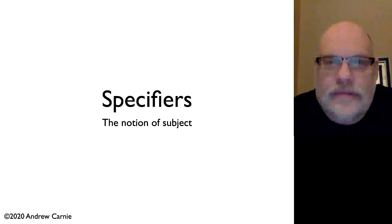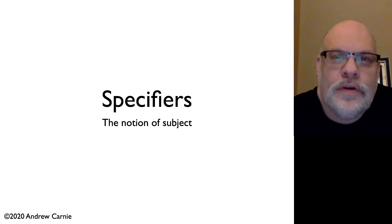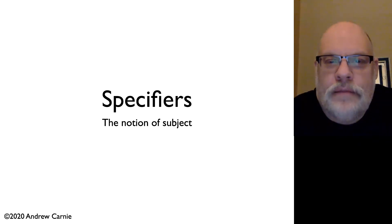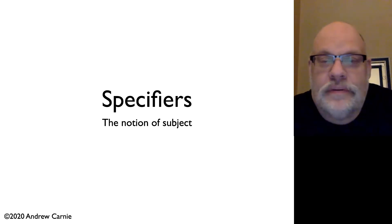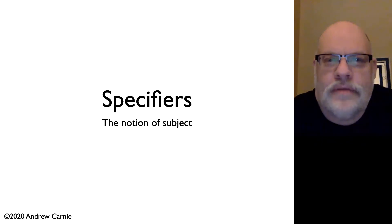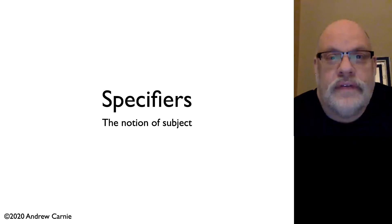The last video in this chapter is about our mystery specifiers. These are the modifiers that we weren't really able to explain in the previous unit when we were talking about X-bar theory. We were able to distinguish complements from adjuncts quite well, but specifiers remained a bit of a mystery. In fact, the only specifier we had was a determiner.